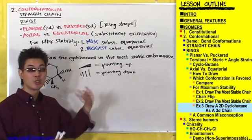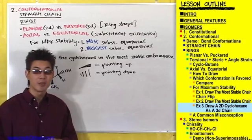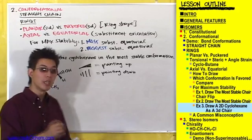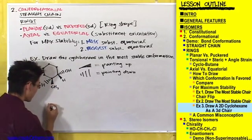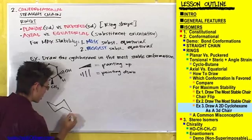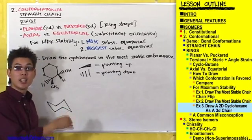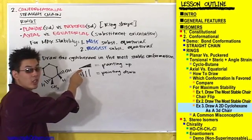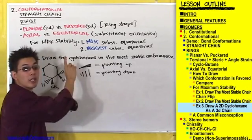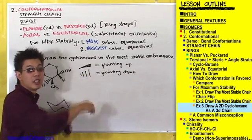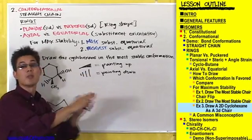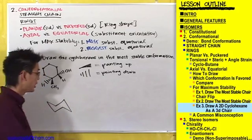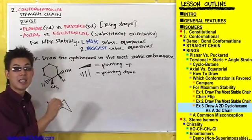So let's see how this applies to drawing the chair conformation. The first thing you are going to do when given this type of problem is draw a blank chair. The next thing is to assign whether a wedge means up or down — we've said a solid wedge means pointing up and a dash means pointing down. But before you start putting substituents on this chair, label your carbons.